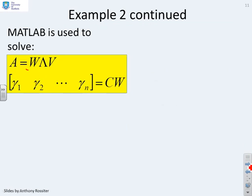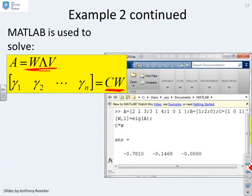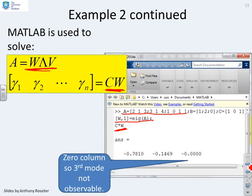So what we're looking for is the eigenvalue eigenvector decomposition. So A equals W lambda V. And then we want to create this matrix C times W. So here's the MATLAB code. You'll see I've put in my A matrix. There it is. I've done my eigenvalue eigenvector decomposition. And then I've just done C times W. And what do you notice here? Here we have a zero column. The third column is zero. And therefore the third mode of this system is not observable.